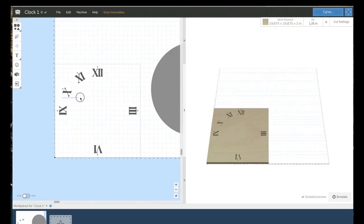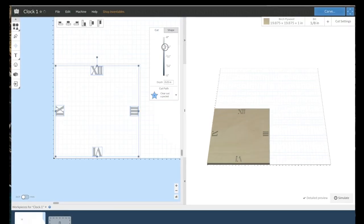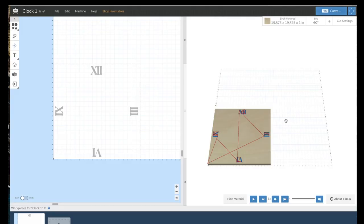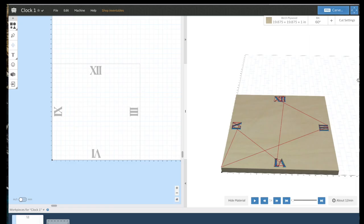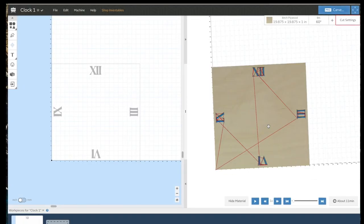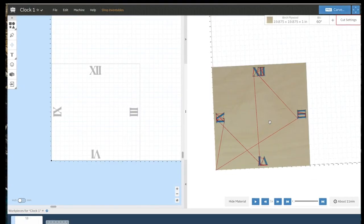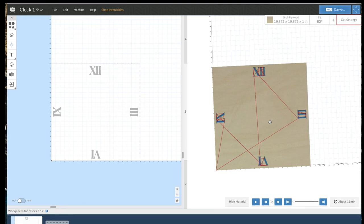Now I realize that not everybody has a CNC machine, but you can simply do this with a router or basically carve it out with chisels or even just with a stencil and paint the numbers on. Alright, now that we got the numbers all laid out, I can go ahead and fire up the CNC and start carving.